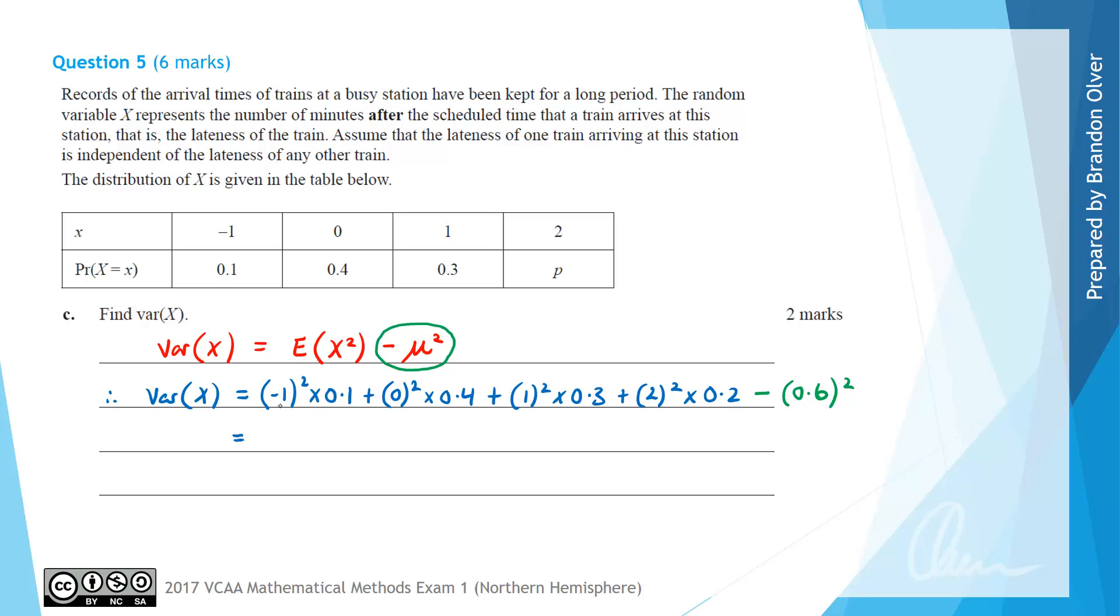So that means our variance of X is equal to negative 1 squared becomes positive 1 times 0.1, so that's just 0.1. 0 squared times 0.4 is just 0. 1 squared is 1 times 0.3 is just plus 0.3.